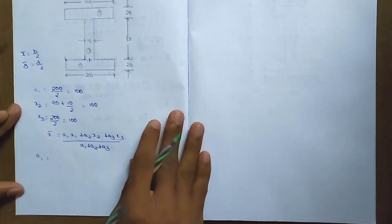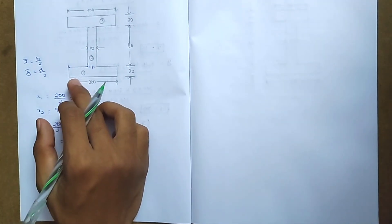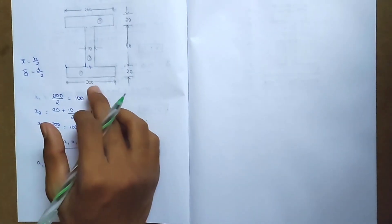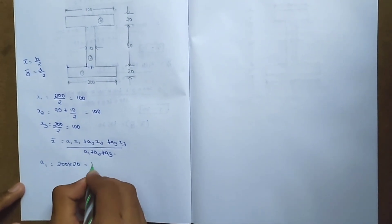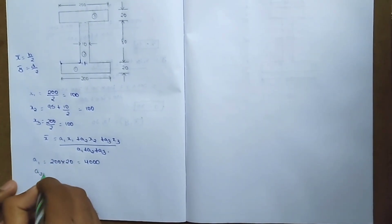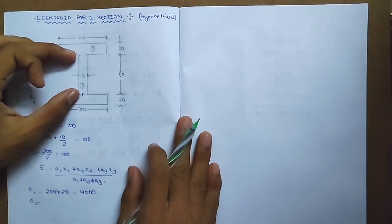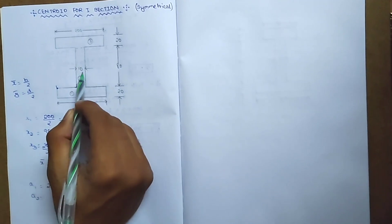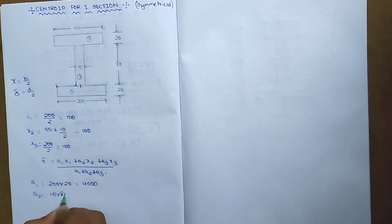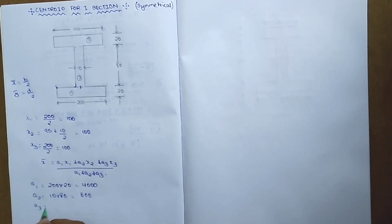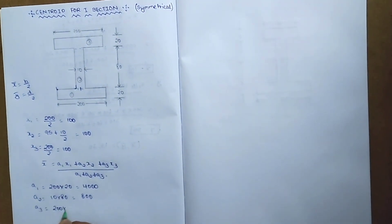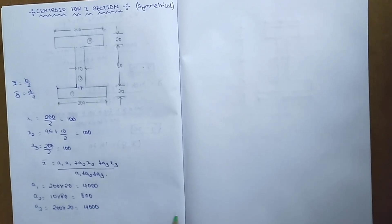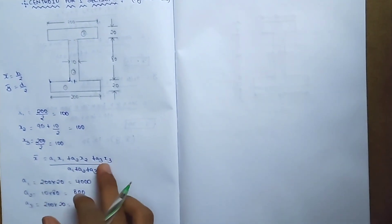x-bar is equal to A1×x1 plus A2×x2 plus A3×x3, divided by A1 plus A2 plus A3. We need the area values. A1 equals the first rectangle area: length into breadth, which is 200 into 20, equals 4000. Area 2 is the vertical web: 10 into 80. Area 3 is 200 into 20.